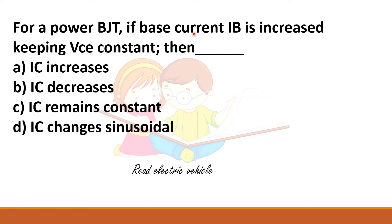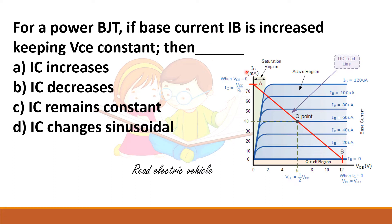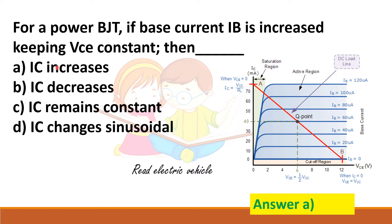Next question: for power BJT, if the base current is increased while keeping VCE constant, you should know the output characteristics of power BJT — drawn between output current and output voltage. At a fixed VCE, as the base current is increased, the collector current also increases. So IC increases.